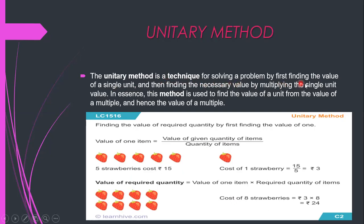Next is the unitary method — a technique for solving problems by first finding the value of a single unit, then multiplying to find the required value. First find the cost of one item, then multiply by the required quantity. For example: if 5 strawberries cost 15 rupees, find the cost of 8 strawberries.